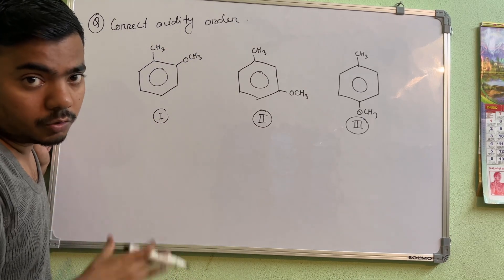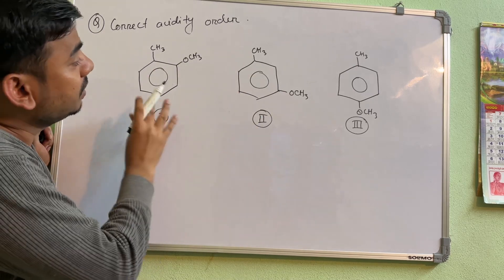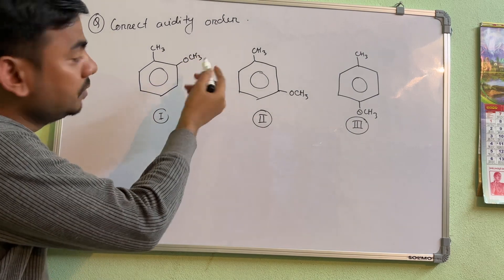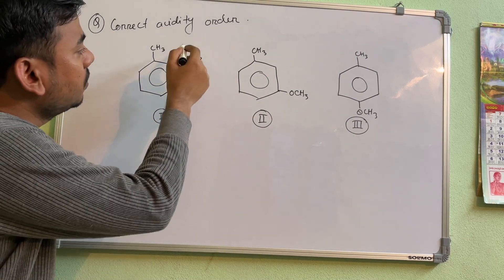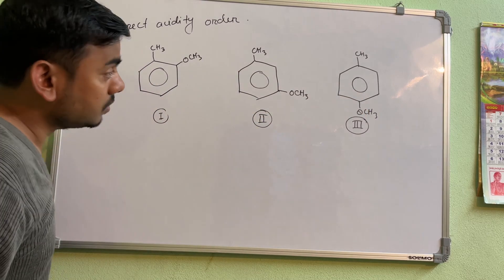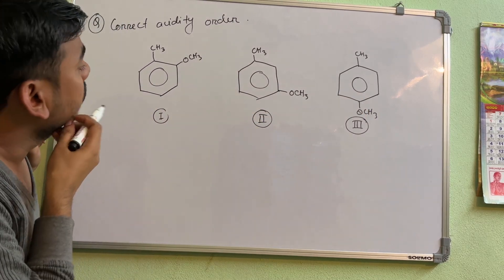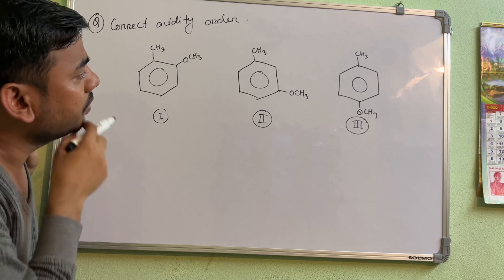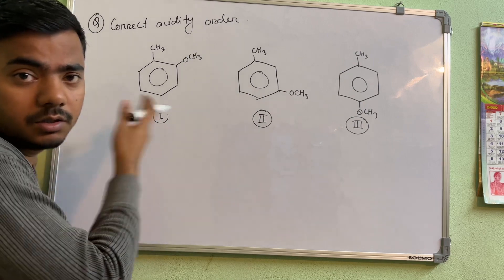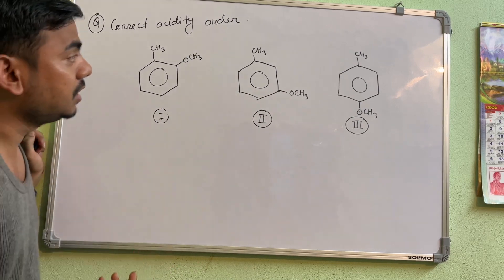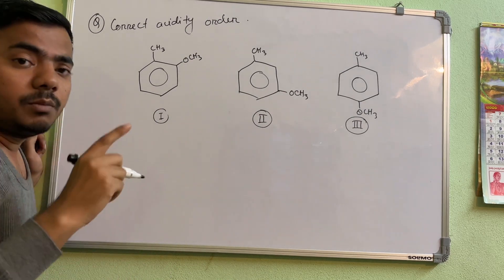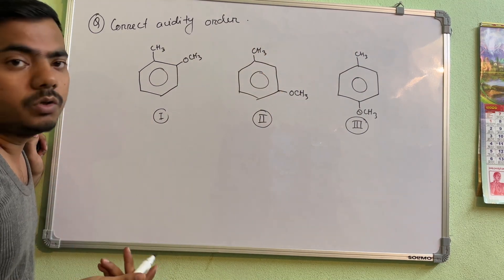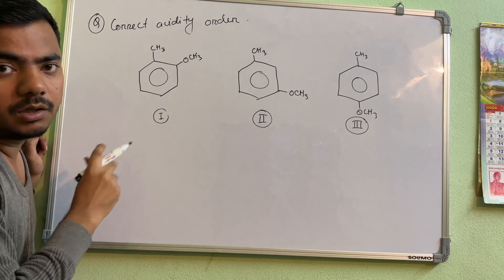What they are asking is the correct acidity order. You have to find out which one is more acidic and which one is less acidic. They have given three compounds — almost the same compound — only the methoxy group (OCH₃) position is changed: here ortho, here meta, here para. So one, two, three. You have to tell which one is most acidic first of all.